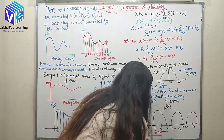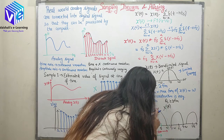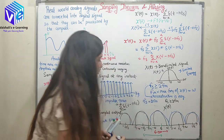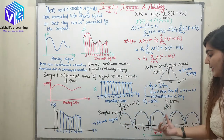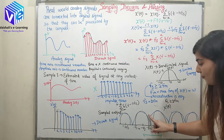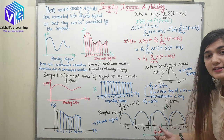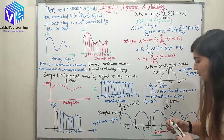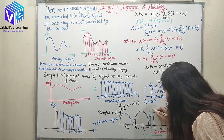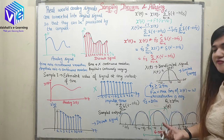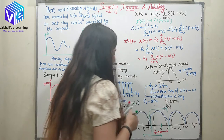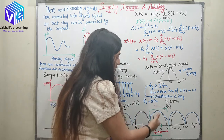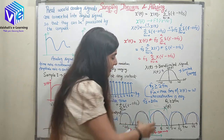With blue I am representing Fs equals 2Fm, and with black I represent Fs greater than or equal to 2Fm. When Fs equals 2Fm I require an ideal low pass filter — the low pass filter should have an ideal cutoff frequency to reconstruct this signal, otherwise I will be getting other components as well. This type of ideal cutoff frequency is not practical, so practically it cannot be reconstructed, but ideally I can reconstruct it.